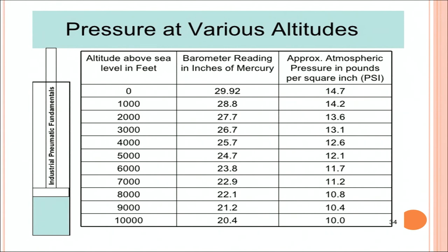Through this table we can see the first column gives you the results of the altitude above the sea level in feet. The second column shows the barometer reading of mercury in inches and the last is the atmospheric pressure. If you look at the sea level which has zero height, the atmospheric pressure is 14.7 and the barometer reading shows 29.92. As we increase the height above sea level to 1000 feet, it decreases to 28.8 in the barometer reading and the approximate atmospheric pressure is 14.2.